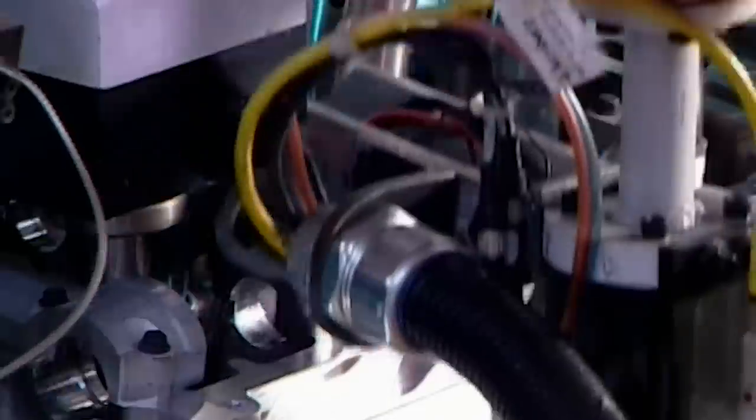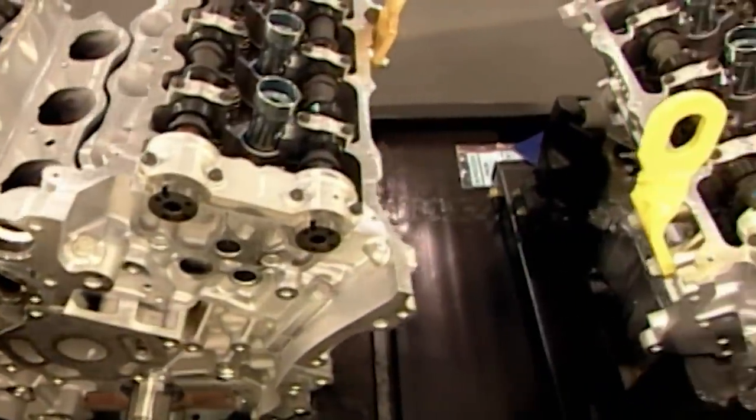The black tubes running front to back are the camshafts, the components that open and close those valves. There are four per engine.